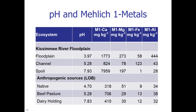We will look at the pH and Mehlich-1 metals of this area. In the spoil area there is a high pH of 7.93. The dairy holding area also has a high pH, but other properties differ — for example, the Mehlich-1 calcium and Mehlich-1 magnesium are invariably higher in the spoil than in a dairy holding manure-impacted soil. The spoil material has some similarity in values with the floodplain, though the floodplain has a very low pH.